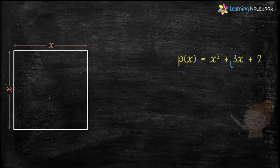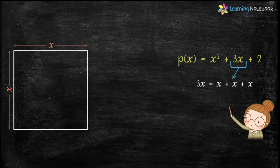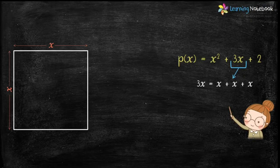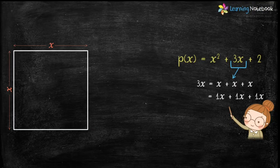Now let's draw the second term of the polynomial which is 3x. 3x equals x plus x plus x, or we can say 3x equals 1 times x plus 1 times x plus 1 times x, and 1 times x is the area of a rectangle.